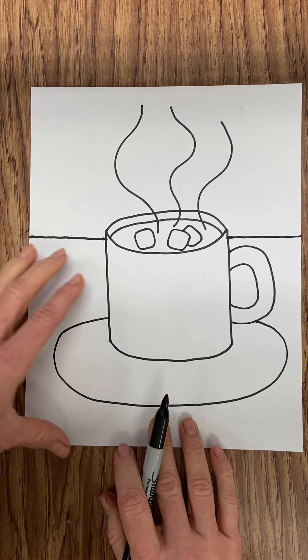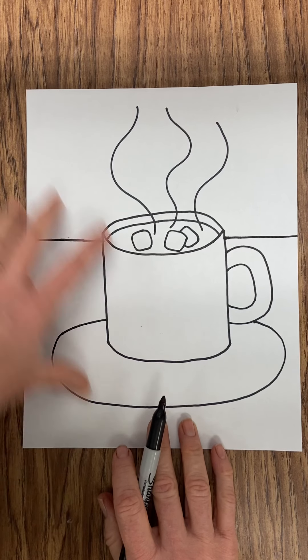Now in this case, my ground line is dividing a table from the wall.